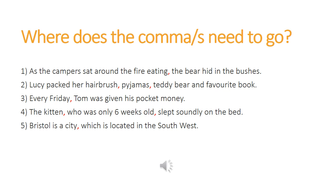Okay, how did you all get on with that? Let's mark it together now. Remember to tick the ones you got right and correct any marvellous mistakes. Sentence one is a complex sentence and it starts with a subordinating conjunction, 'as'. Therefore, I need a comma to separate the subordinate clause from the main clause. In this sentence, the main clause is 'the bear hid in the bushes.' 'As the campers sat around the fire eating' adds extra information but doesn't make sense on its own, so I need to put a comma between those two clauses.